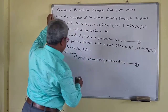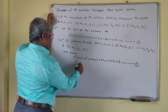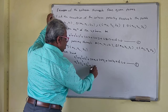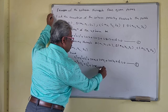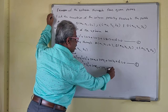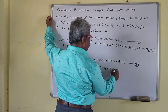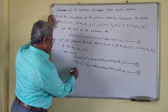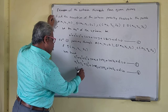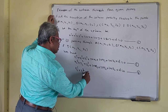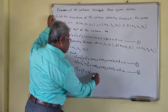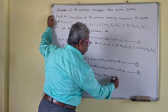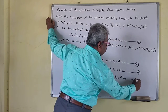Similarly, x₂² + y₂² + z₂² + 2ux₂ + 2vy₂ + 2wz₂ + d = 0 — we call this equation 3. And x₃² + y₃² + z₃² + 2ux₃ + 2vy₃ + 2wz₃ + d = 0 — we call this equation 4.